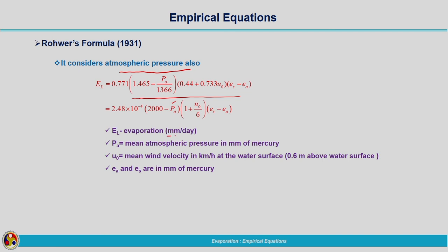In Rohr's Formula, El is the evaporation in millimetres per day, Pa is the mean atmospheric pressure in millimetres of mercury — note it is not in Pascals, so you must be careful about the unit. u₀ is the mean wind velocity in kilometres per hour at the water surface; since measuring exactly at the surface is difficult, a height of about 0.6 metres above the water surface can be used. Es and Ea are vapour pressures also expressed in millimetres of mercury.